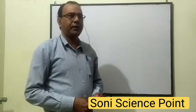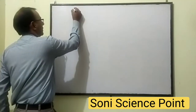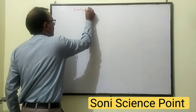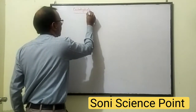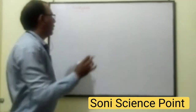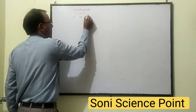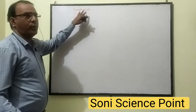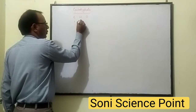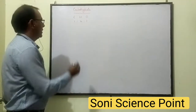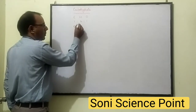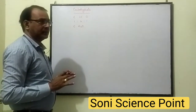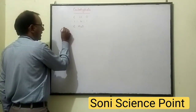Hello friends, in this part we will discuss Carbohydrates. Carbohydrate is the compound which is made up of Carbon, Hydrogen, and Oxygen in the ratio 1:2:1. It means one carbon molecule combined with one molecule of water to form Carbohydrates. Therefore, it is known as Hydrate of Carbon.